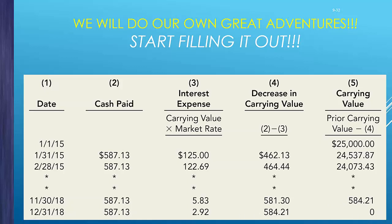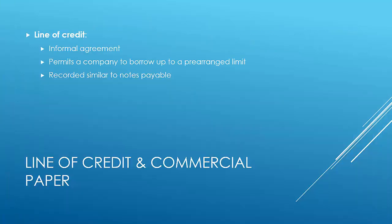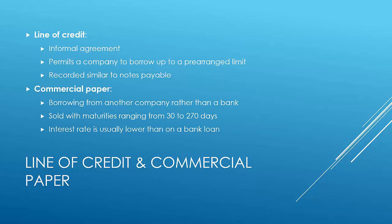A line of credit is an informal agreement with the bank — similar to a home equity line of credit — where a pre-arranged amount of money is available to you at any time with less paperwork. If a company borrows from another company rather than a bank, that's called commercial paper. It's recorded the same way as a notes payable, just between two companies.